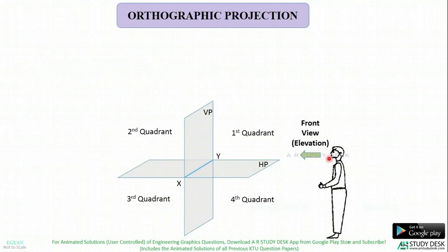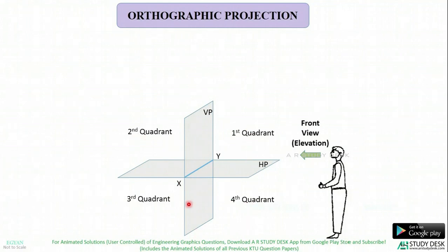Let us revise this. The 2 quadrants above HP are 1 and 2. The 2 quadrants below HP are 3 and 4. The 2 quadrants in front of VP are 1 and 4. The 2 quadrants behind VP are 2 and 3.